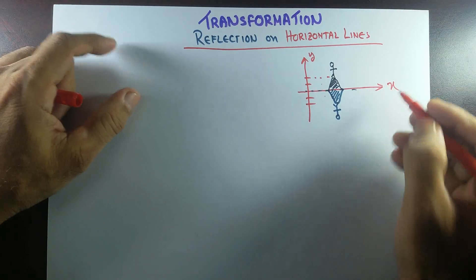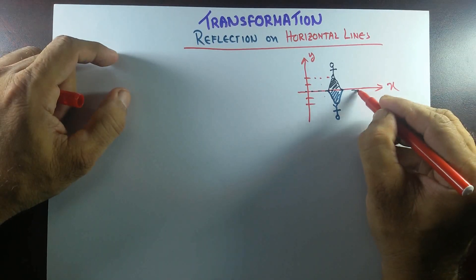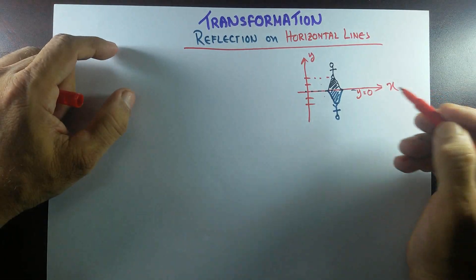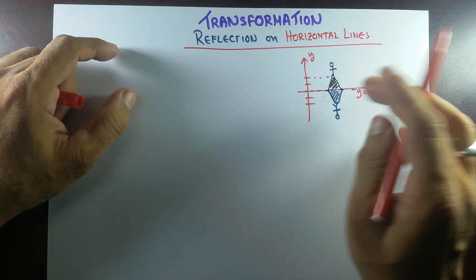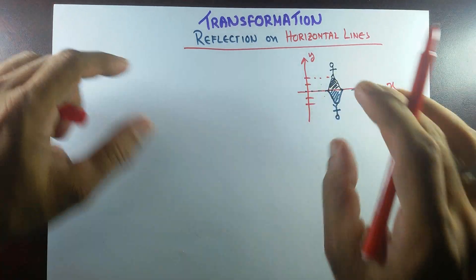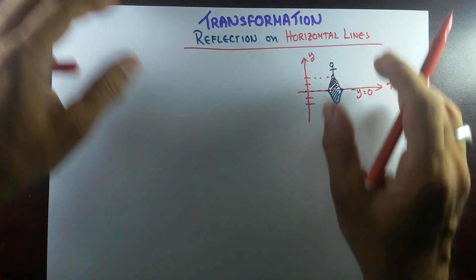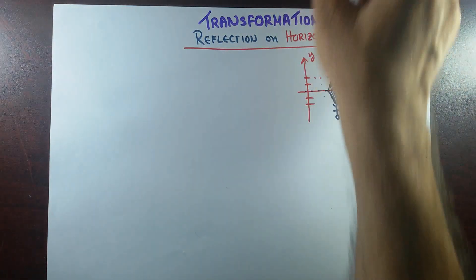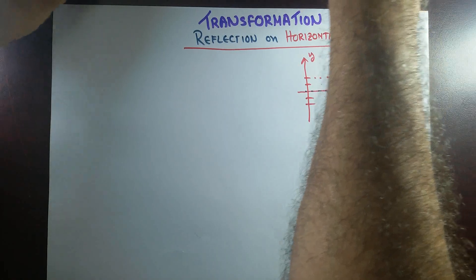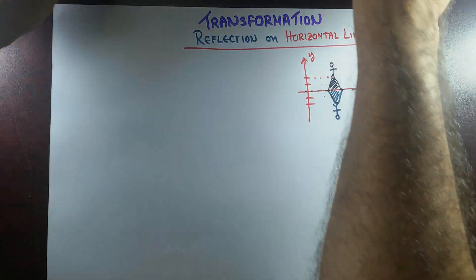The equation of this x-axis is y equal to 0. Let's see how we can apply this same concept on a piece of paper.